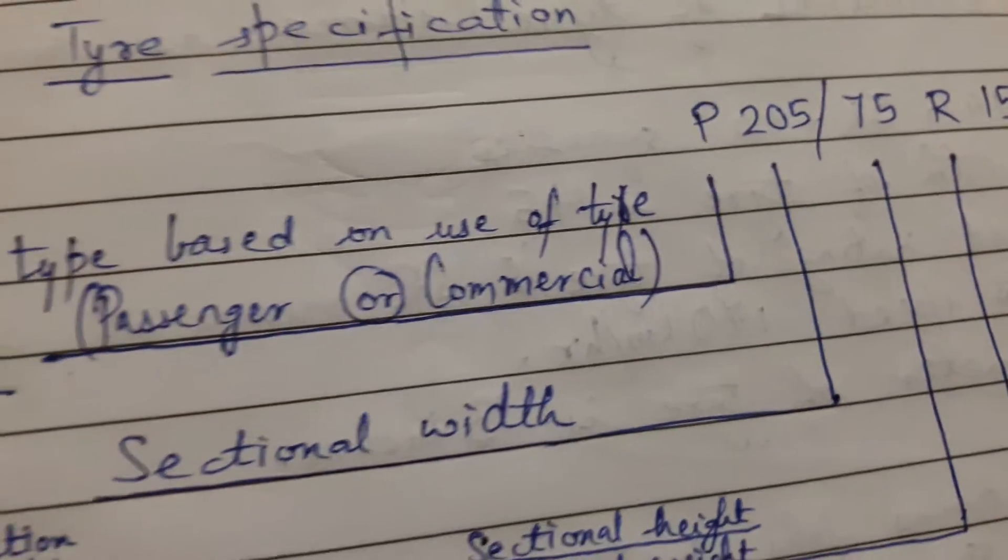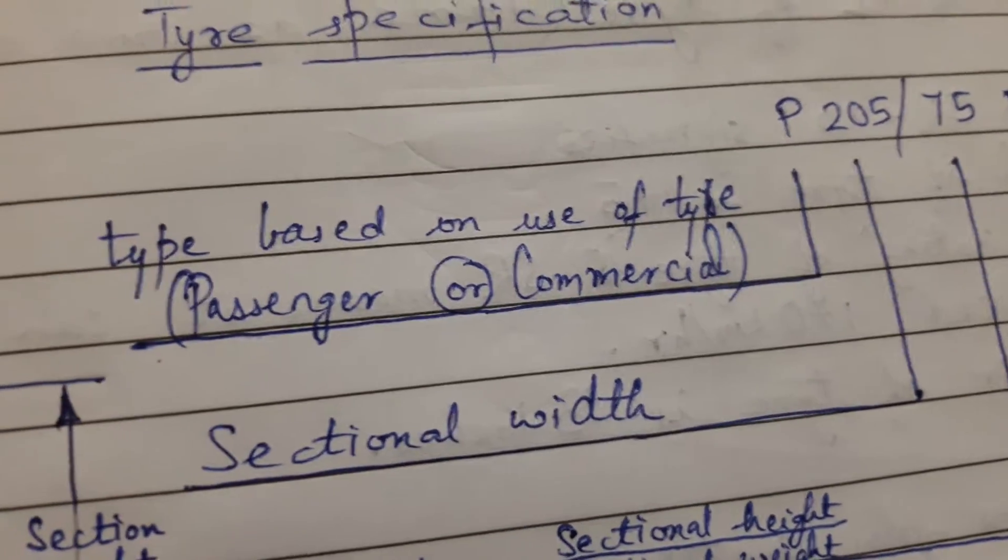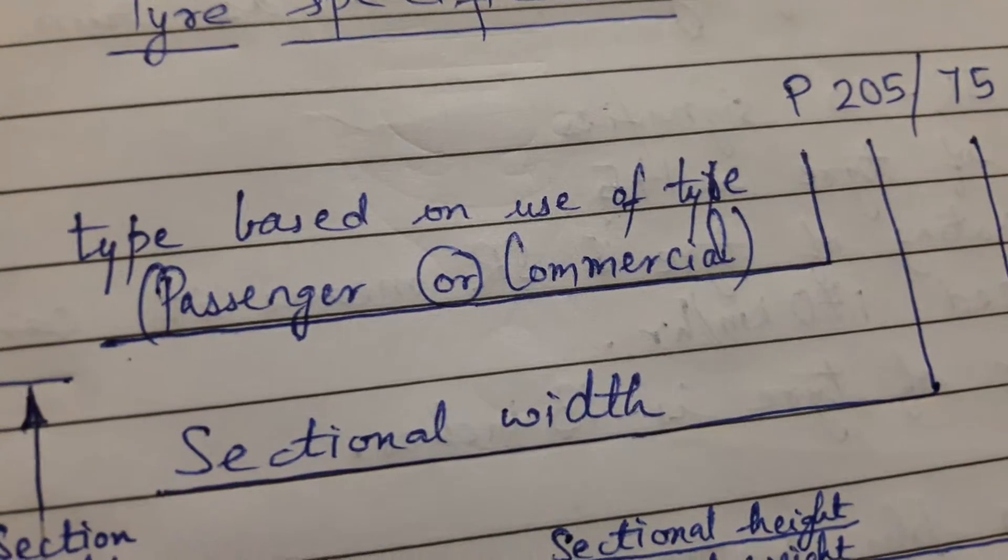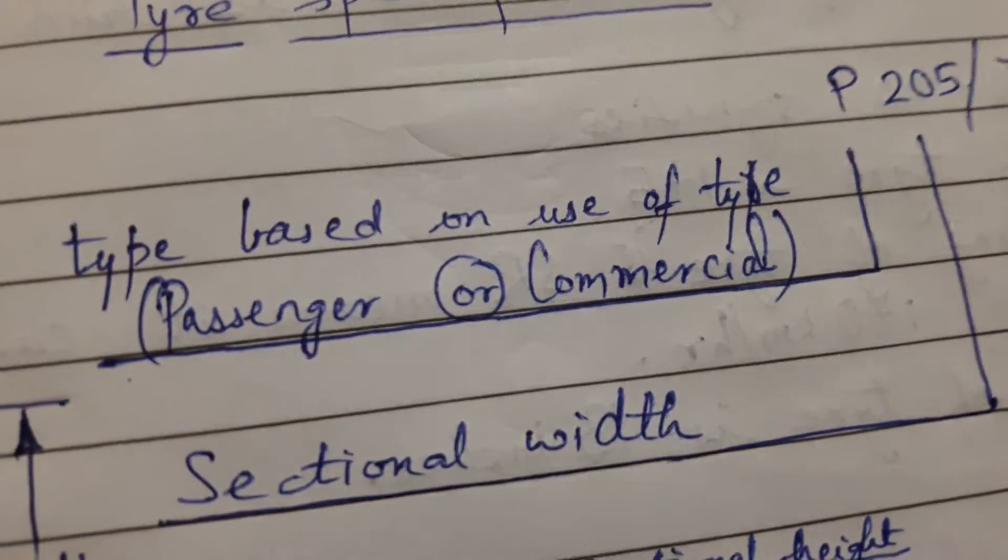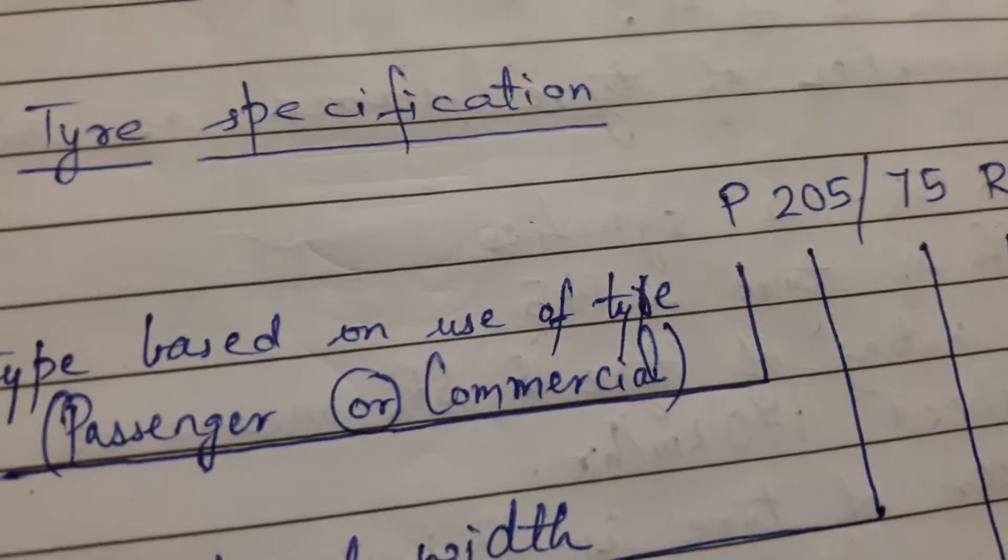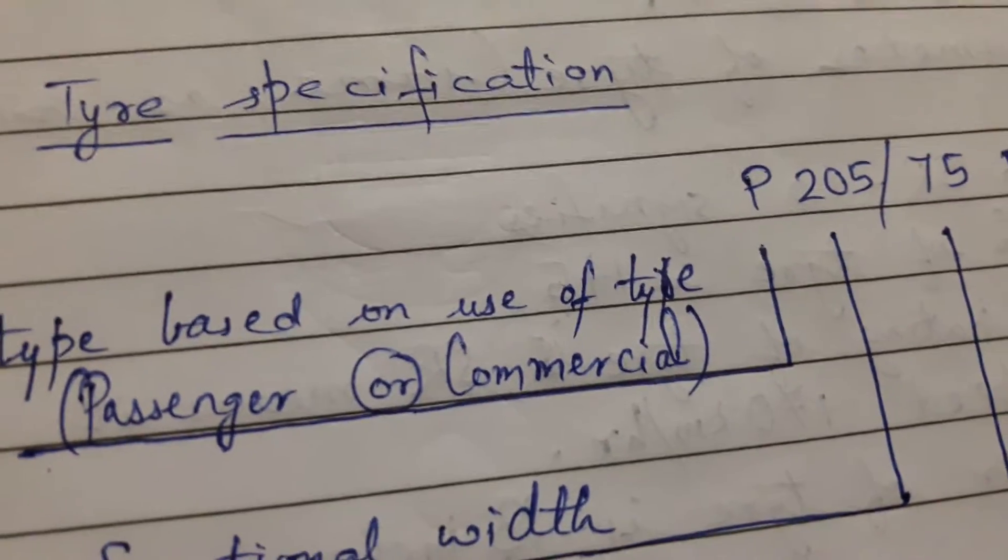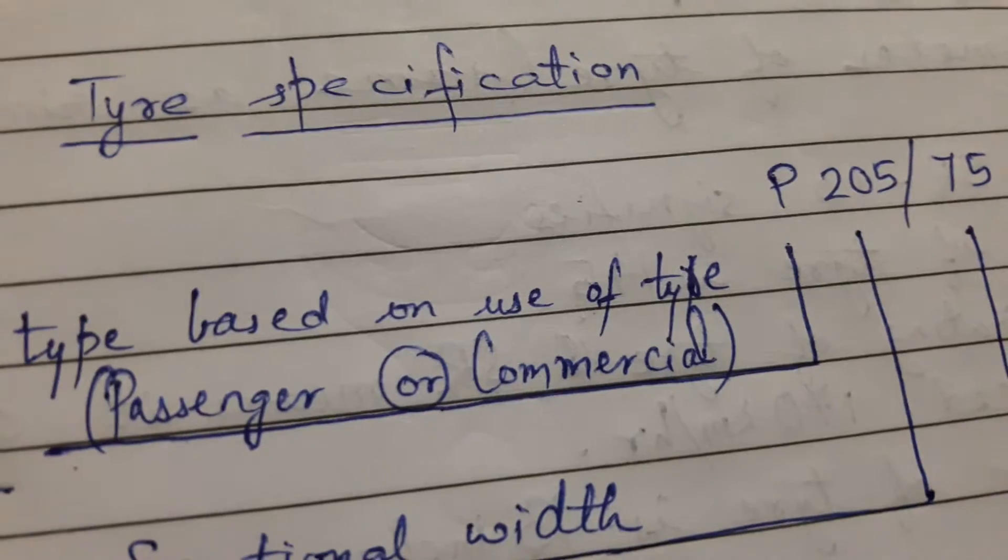The first alphabet, as you can see, P, actually mentions what type of vehicle it is: passenger vehicle or commercial vehicle. Here it is written P, that means it is a passenger vehicle.